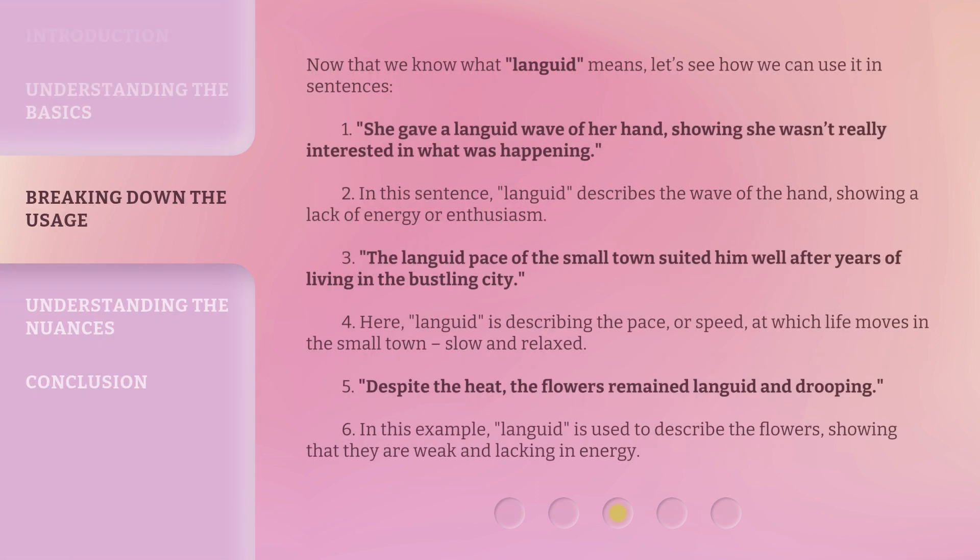Now that we know what 'languid' means, let's see how we can use it in sentences. One: 'She gave a languid wave of her hand, showing she wasn't really interested in what was happening.' In this sentence, 'languid' describes the wave of the hand, showing a lack of energy or enthusiasm.